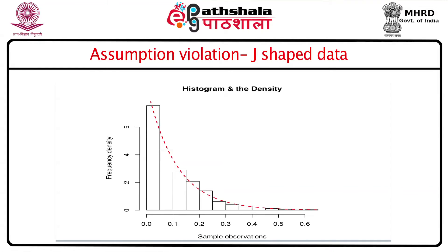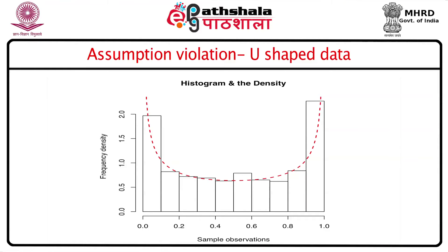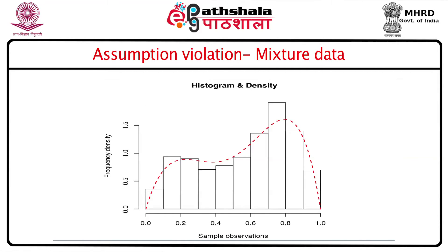The histogram or data can look J-shaped — that is, it decreases over time, as seen with the exponential distribution used in life-testing problems. Since this is not symmetric, we cannot use the normal distribution for appropriate analysis. There may also be U-shaped data, which, though symmetric, is not bell-shaped, so we cannot use the normal distribution and its derivatives such as the t-test or z-test. Finally, there could be mixture data with two or three peaks, where the normal assumption is also not valid.